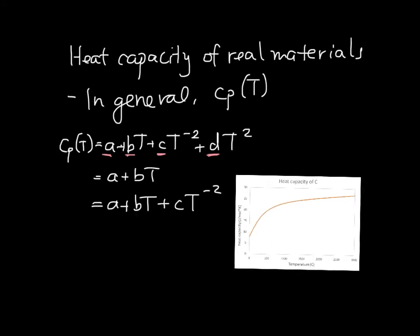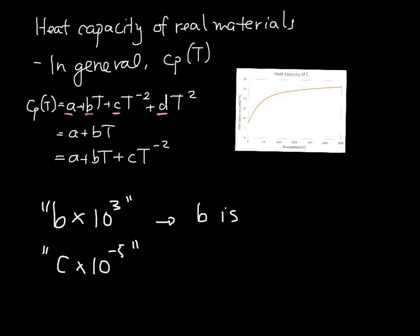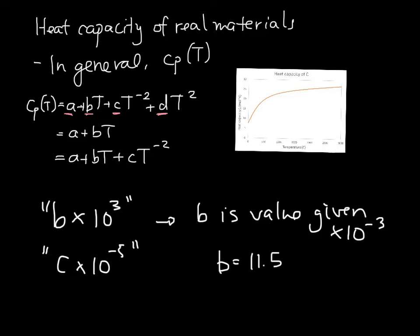One last note regarding how these are tabulated in textbook appendices: the values for b are listed as b×10³, and c as c×10⁻⁵, which can be confusing. This means that b is the value given multiplied by 10⁻³ — so if b is listed as 11.5, you would use 0.0115 in the function. For c, the actual value is the listed number times 10⁵.